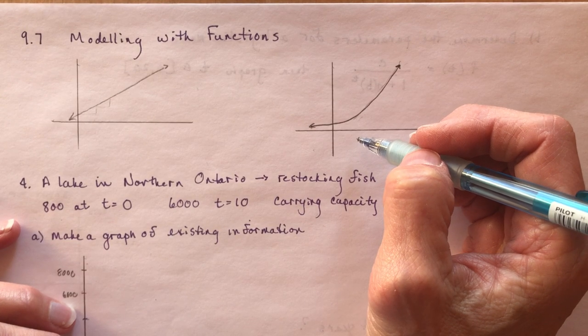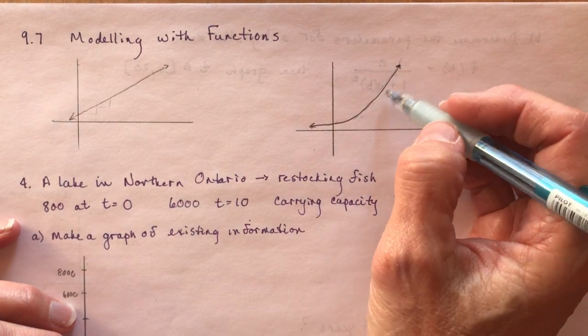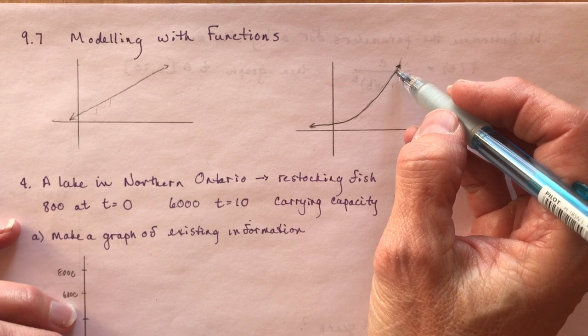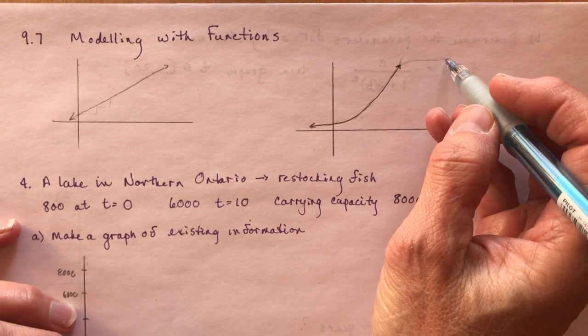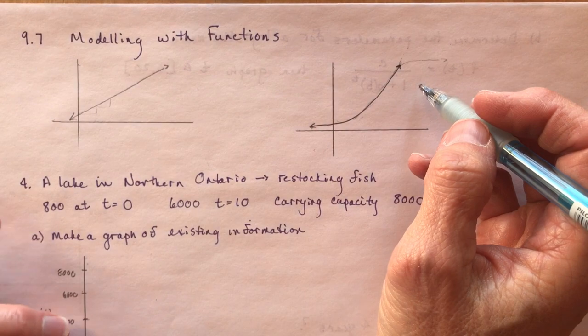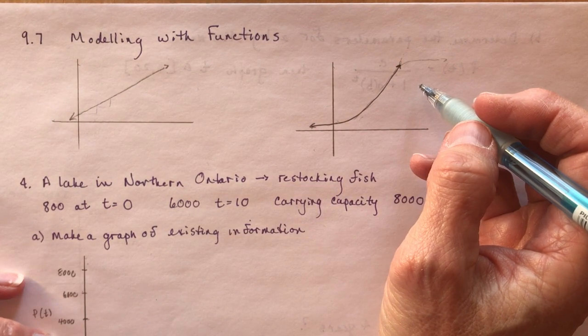The problem with these models is that there is no what we call carrying capacity or maximum value. So if you're talking about population growth, this doesn't make sense because there is a point after which you reach a maximum and things start to level out again.